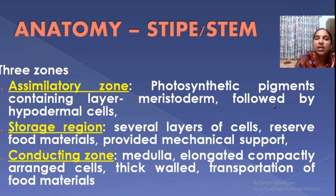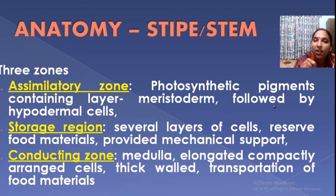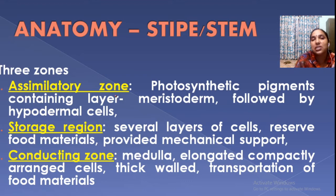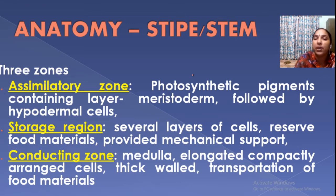Now look at the anatomy. This is very important — you have to take a cross-section of the stem in practical class. When you observe under a microscope you can see three important parts. The first part is the assimilatory zone — assimilation, preparation of food by sunlight — this is photosynthetic. Sargassum contains a brown pigment called fucoxanthin. The photosynthetic pigments are present in the outer layer, the meristoderm — that is the assimilatory zone.